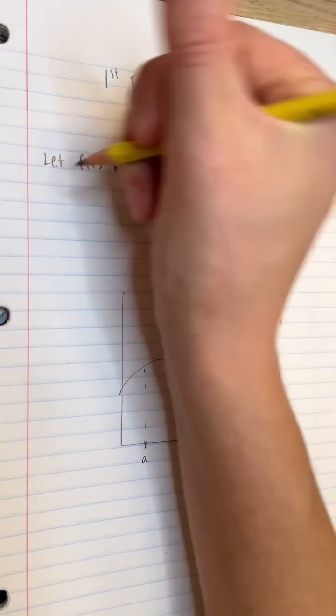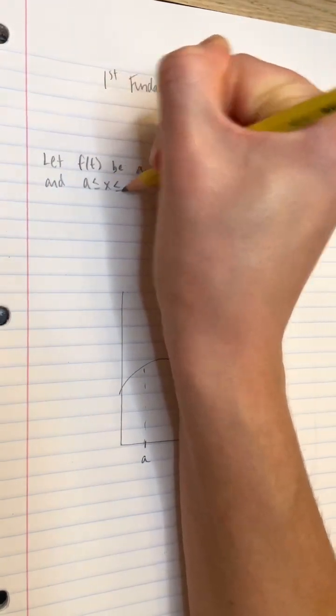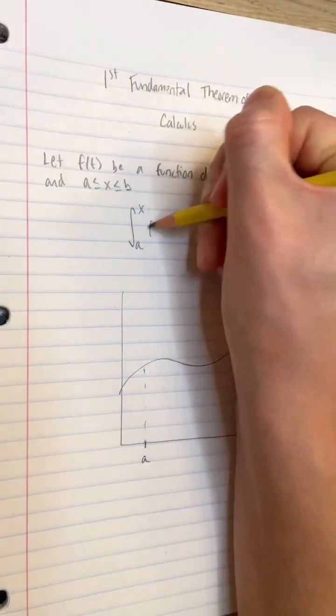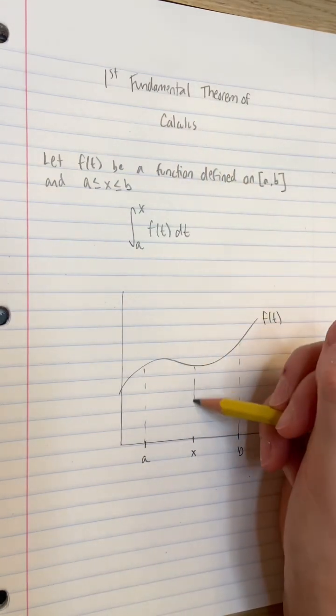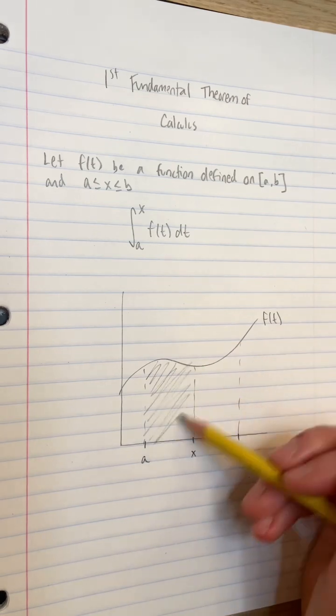Let's make x some other number in this range as well. Now imagine the integral with lower limit a and upper limit x, f of t dt. This represents the area between the curve of f of t, the t axis, t equals a and t equals x.